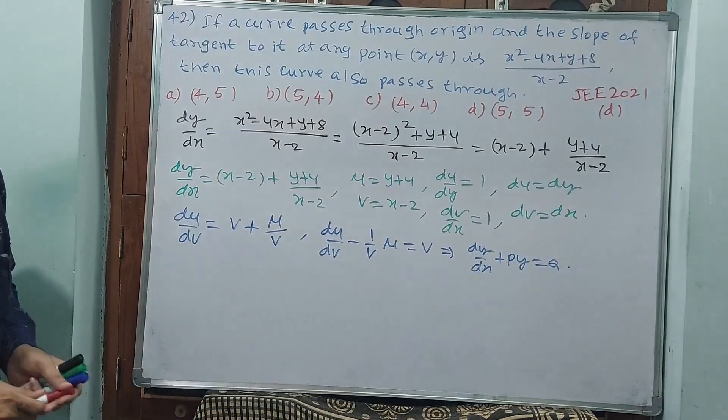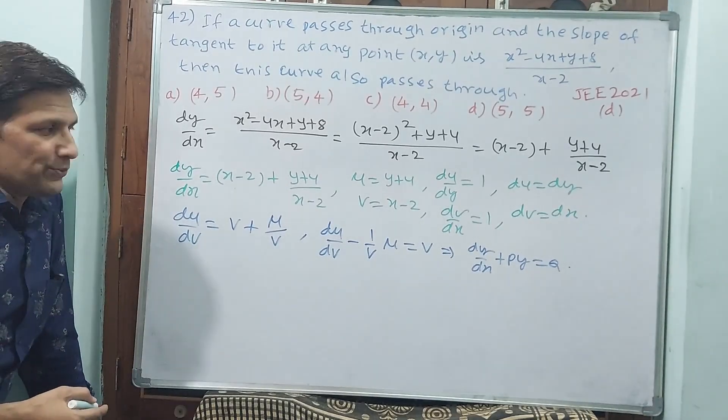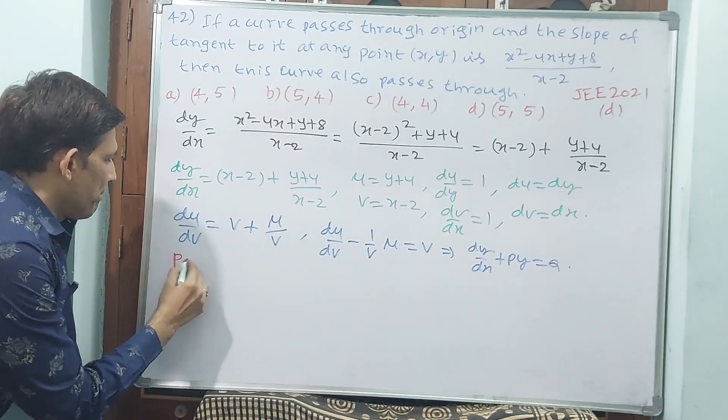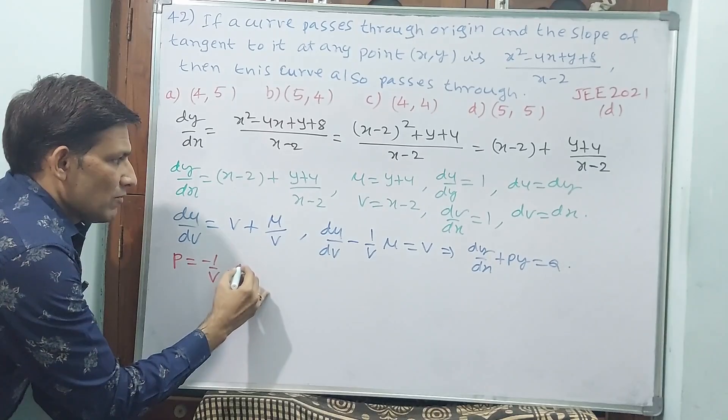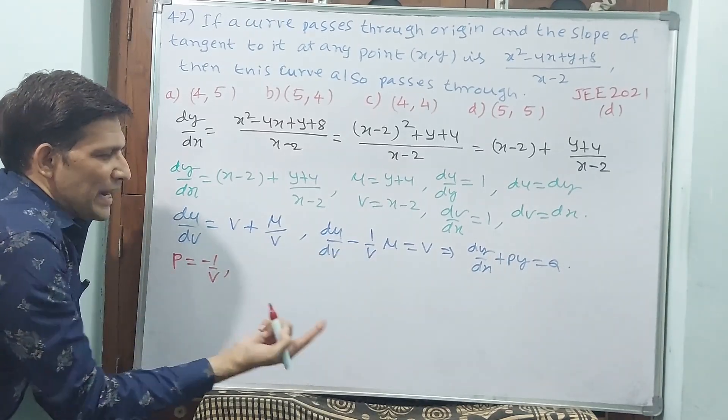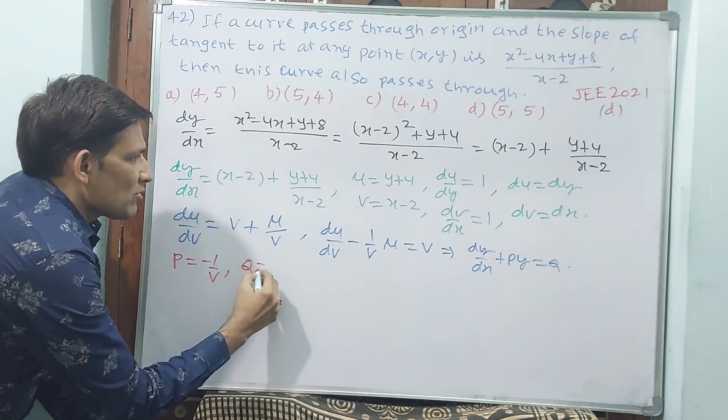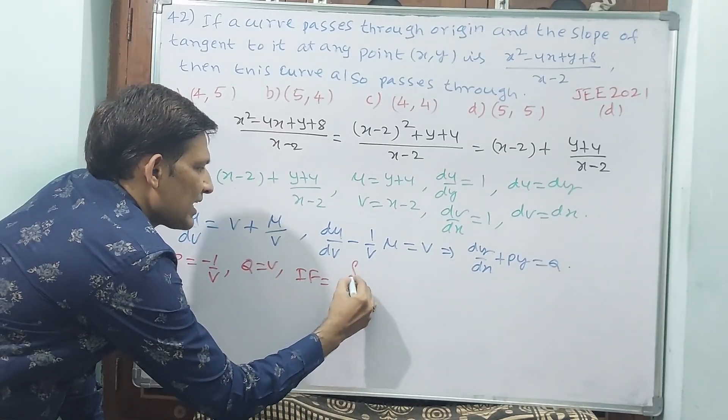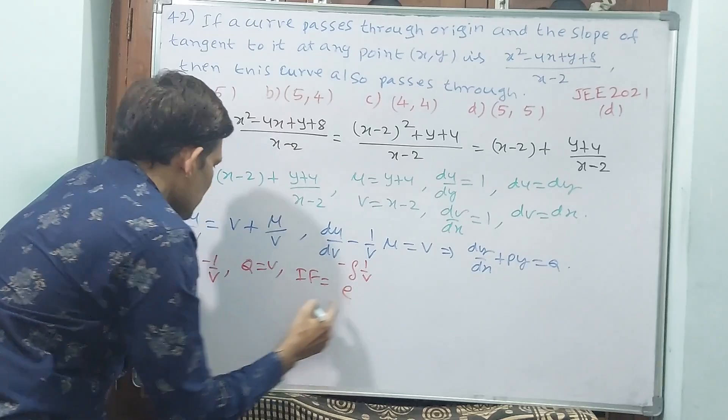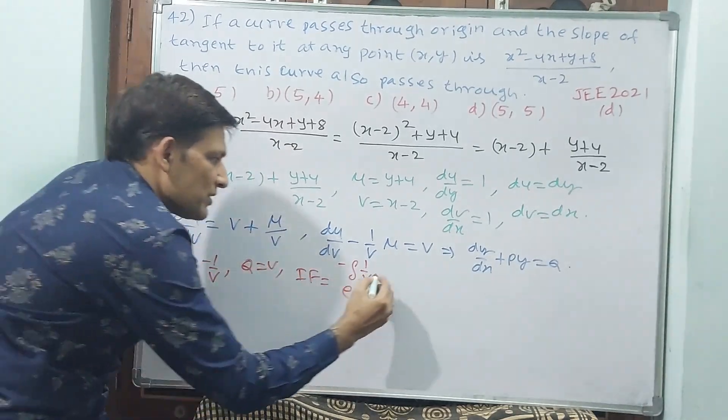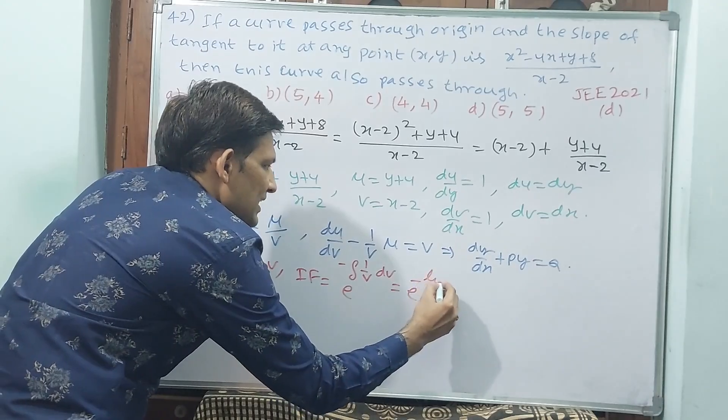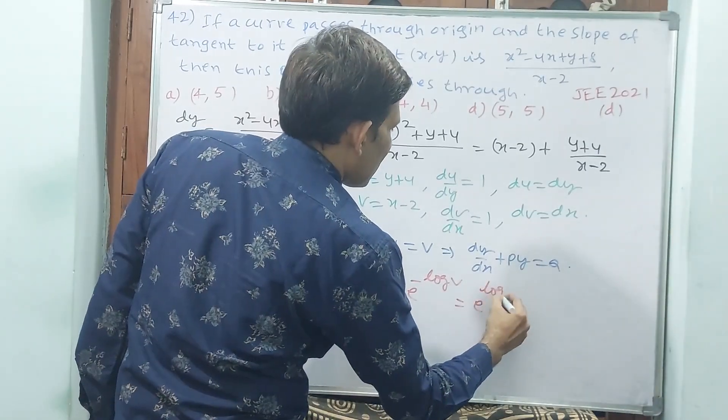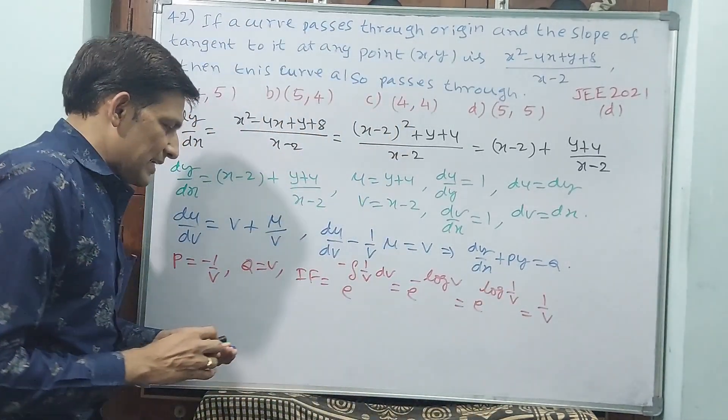Observe carefully. x is v, y is u. P is -1/v. P equals -1/v. Q equals v. Then integrating factor equals e^(∫ -1/v dv). Denominator dv means you have to do with dv. e^(-log v), that equals e^(log 1/v), that equals 1/v. Integrating factor is 1/v.